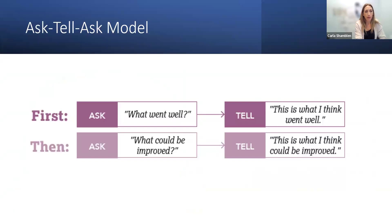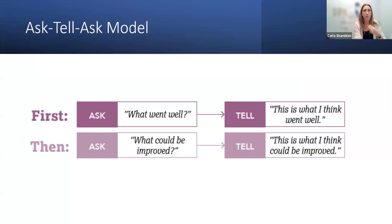The ask-tell-ask method involves asking the student what they think went well and allowing them time to reflect and respond. Then you tell them what you thought they did very well, being very explicit about something specific they did. Then you ask them what they think could be improved on, again allowing time for self-reflection and self-assessment, and then you counter with what you think could be improved. This creates a very bidirectional type of feedback.